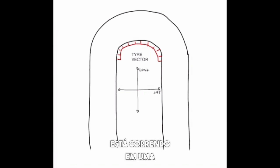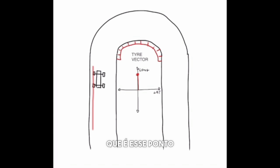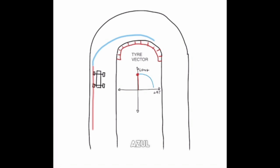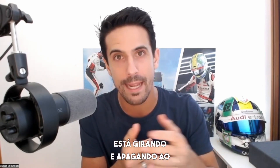When the car is braking at maximum capacity in a straight line, you're using all four tires to stop the car, maximizing the longitudinal force — that's this red dot over there. Then you have the entry phase of the corner, which you can see on the blue line on the track, and also on the tire vector as the combined force between longitudinal and lateral, because at that moment you are turning and braking at the same time.